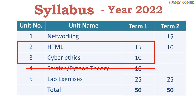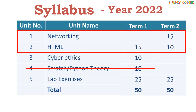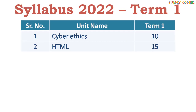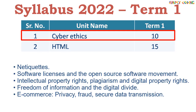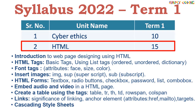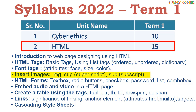Cyber Ethics and the first half of HTML go into Term 1, and Computer Networking and the other half of HTML go into Term 2. Looking at the Term 1 syllabus in detail: Cyber Ethics has five topics to cover, roughly two marks per subtopic. For HTML in Term 1, the content covers introduction, HTML tags, font tags, inserting images, and HTML forms, for 15 marks.